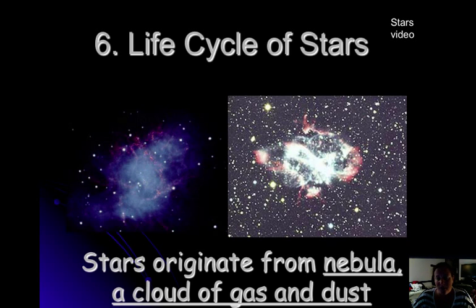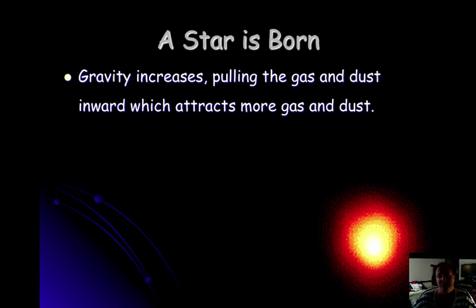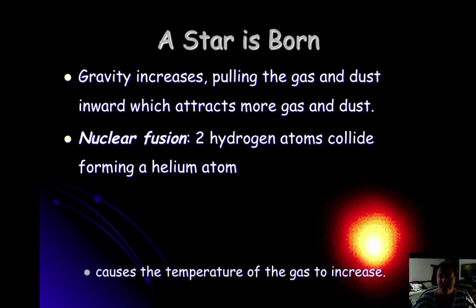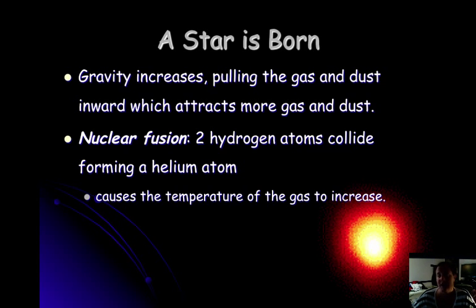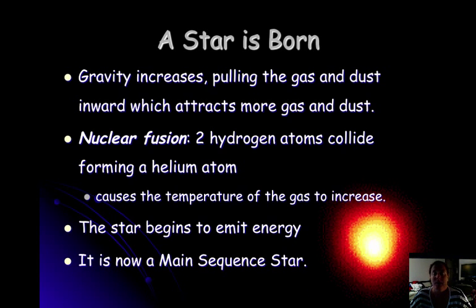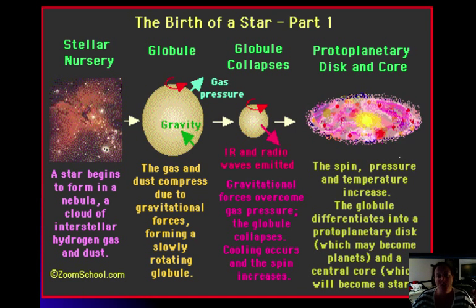Stars originate from a nebula, which is a cloud of gas and dust, just like our solar system. A star is born when gravity increases, pulling that gas and dust inward, attracting more and more material. Eventually, nuclear fusion begins — two hydrogen atoms collide and form helium. This causes the temperature of the gas to increase, the star begins to emit energy, and then it joins the main sequence.